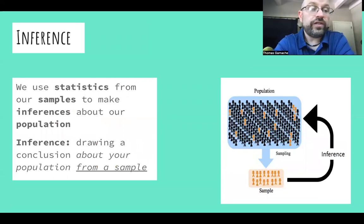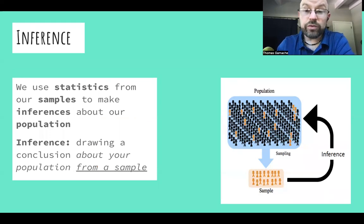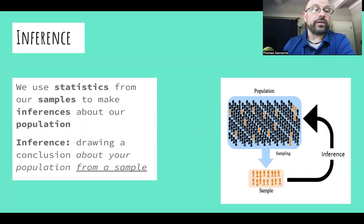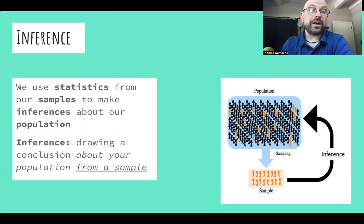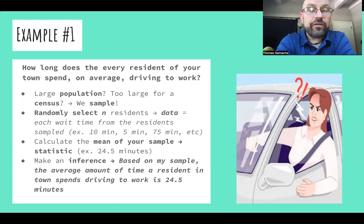An inference is a conclusion that we make about our population based on the results of our sample. We have a large population, we randomly select individuals for our sample, we conclude something about that sample and come up with a summary, and we apply that summary to our entire population. We use statistics from our samples to make inferences about our population. An example: how long does the average resident of your town spend driving to work?